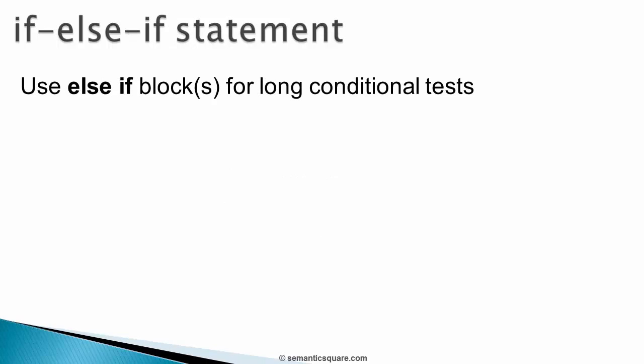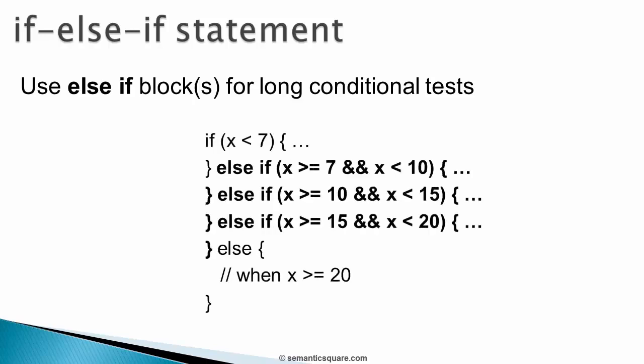Next, if we have a sequence of conditions to be tested, and each condition is associated with some body of code, then we can use else-if blocks. Here is an example where we have a sequence of conditions. The conditions are checked sequentially one after another until one of them is true. When a condition that is true is encountered, the corresponding block of code is executed. Once that block of code is executed, the rest of the if statement is skipped.